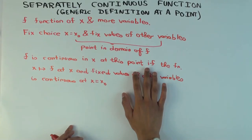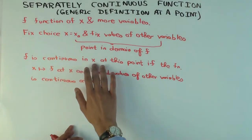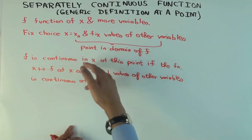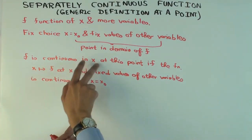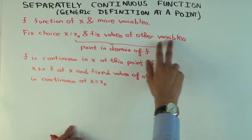If this new function is continuous in x at this point. So in the variable, or relative to this variable at this point, if the new function which just sends this particular input to f at this input and the fixed values of the others.